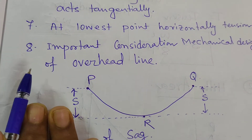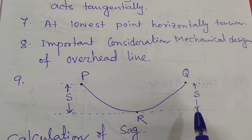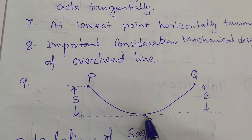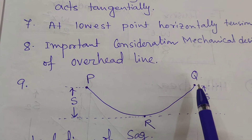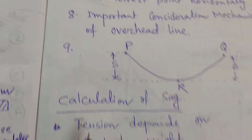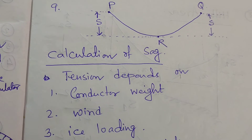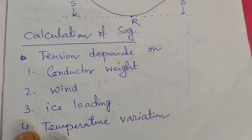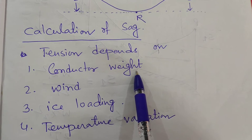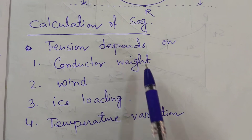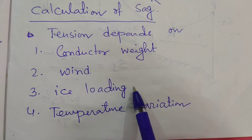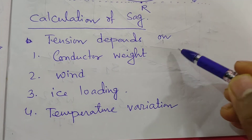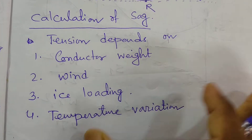This is also applicable for other cases. So this is also the SAG — the difference between the level of R and Q. The calculation of the SAG is very important. Tension depends on the conductor's weight. What is the conductor weight? It is the per unit weight of the conductor, the pressure of the wind, the ice loading, and the temperature variation. So the calculation of SAG and tension also depends on these factors.